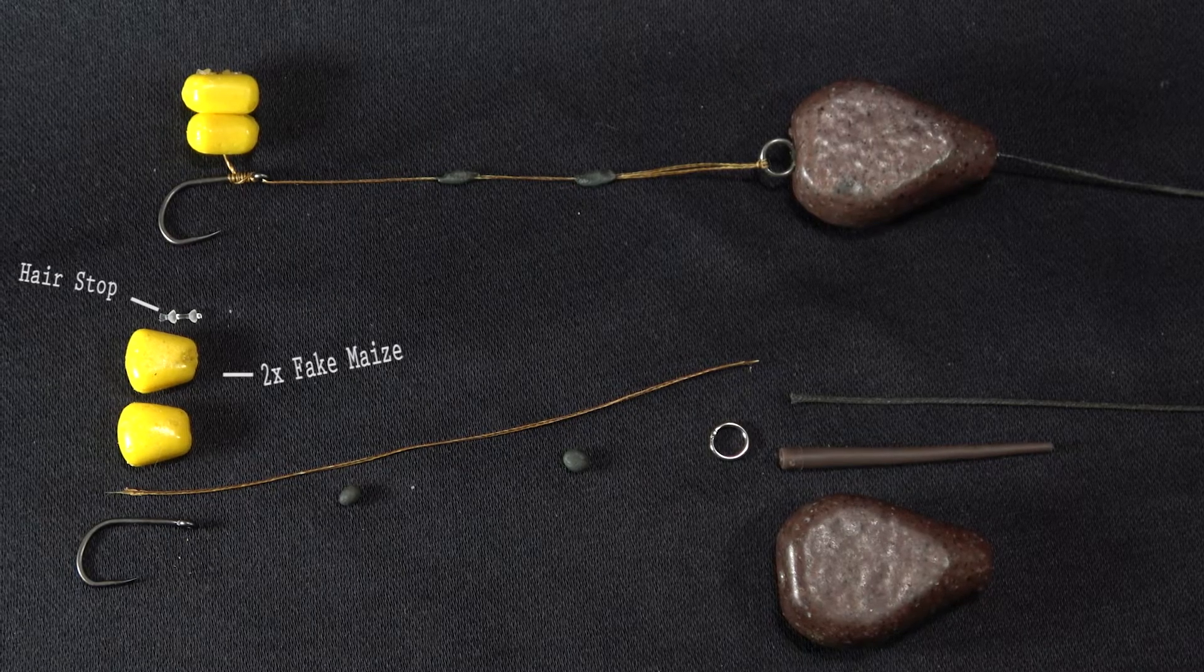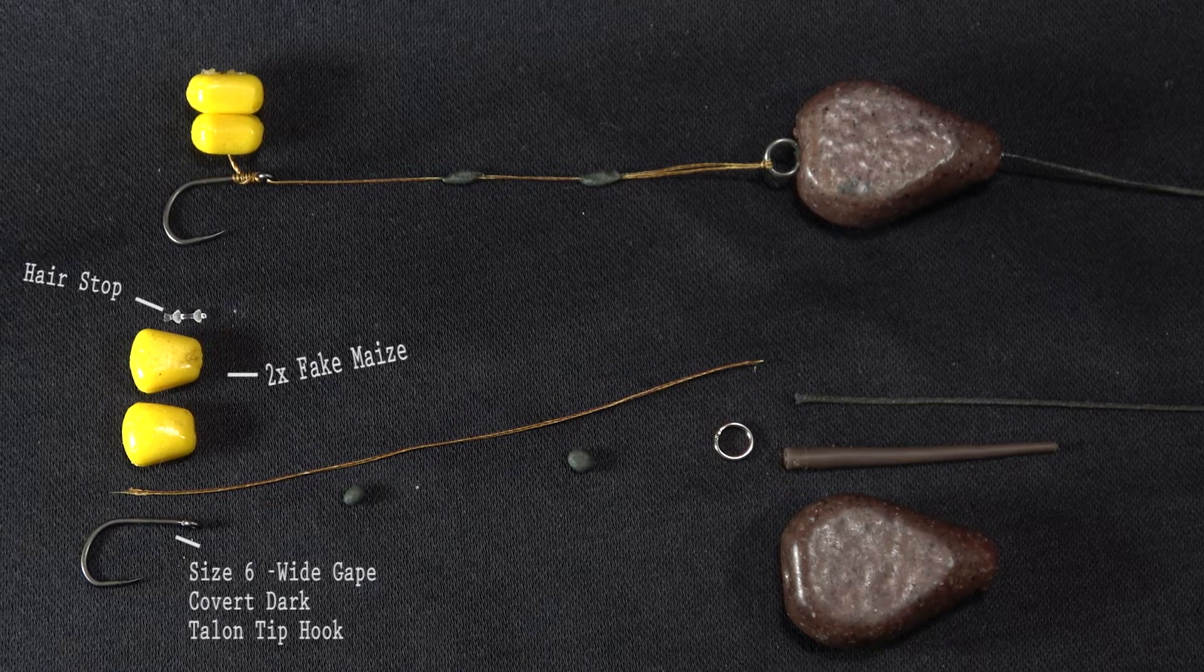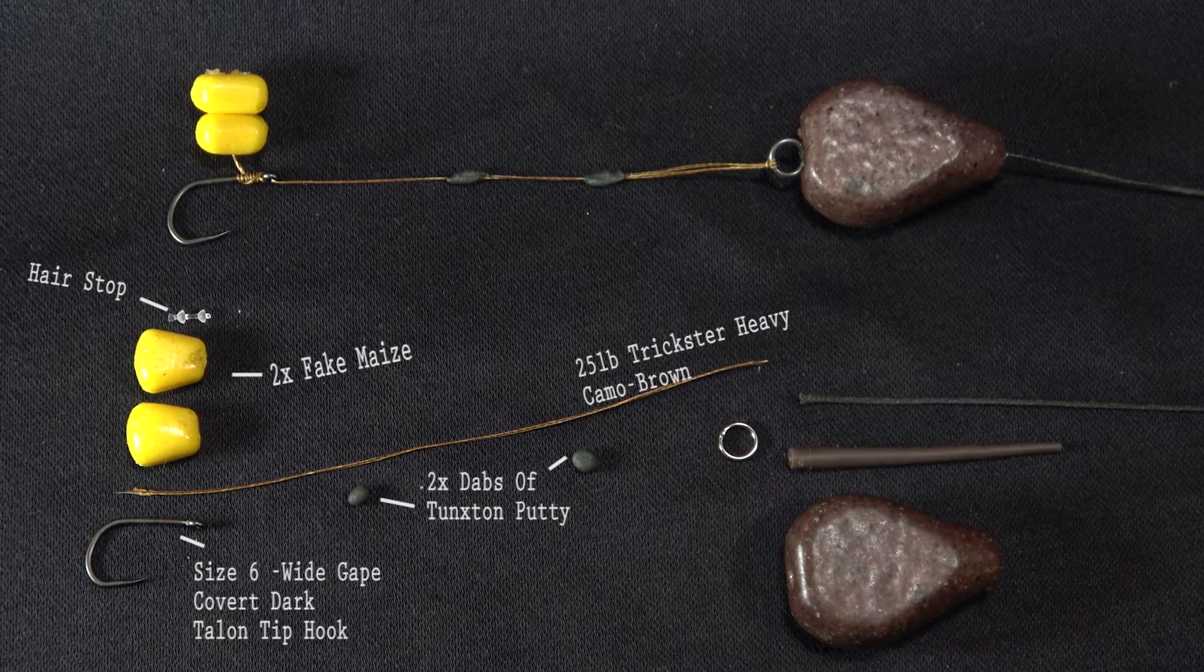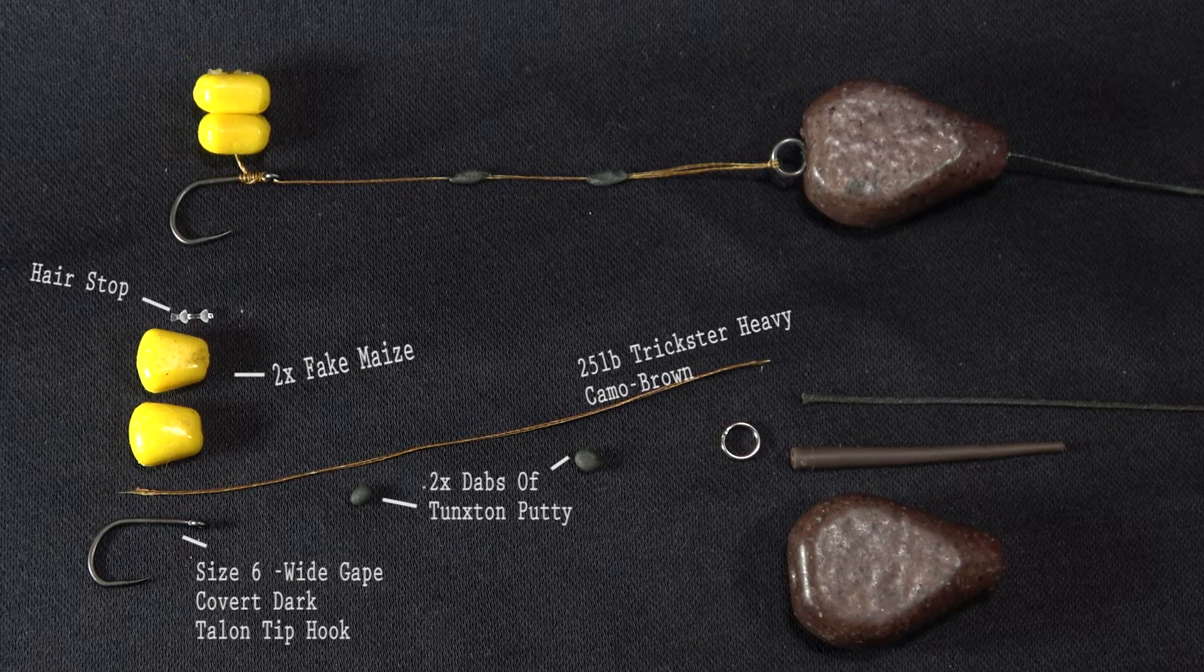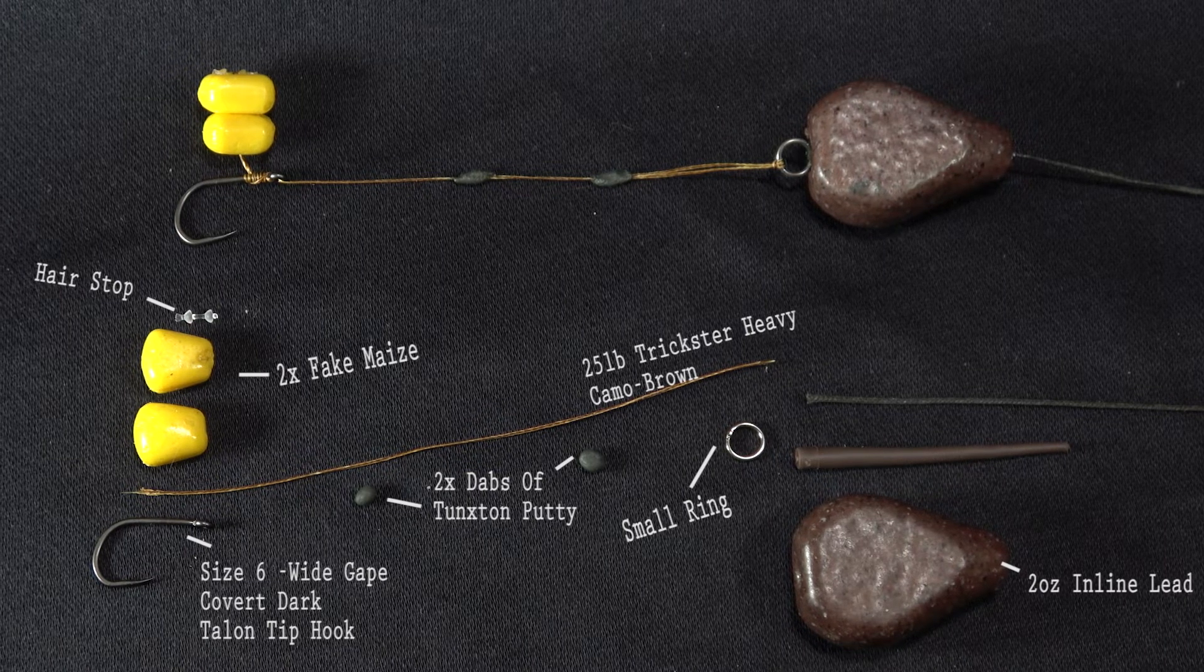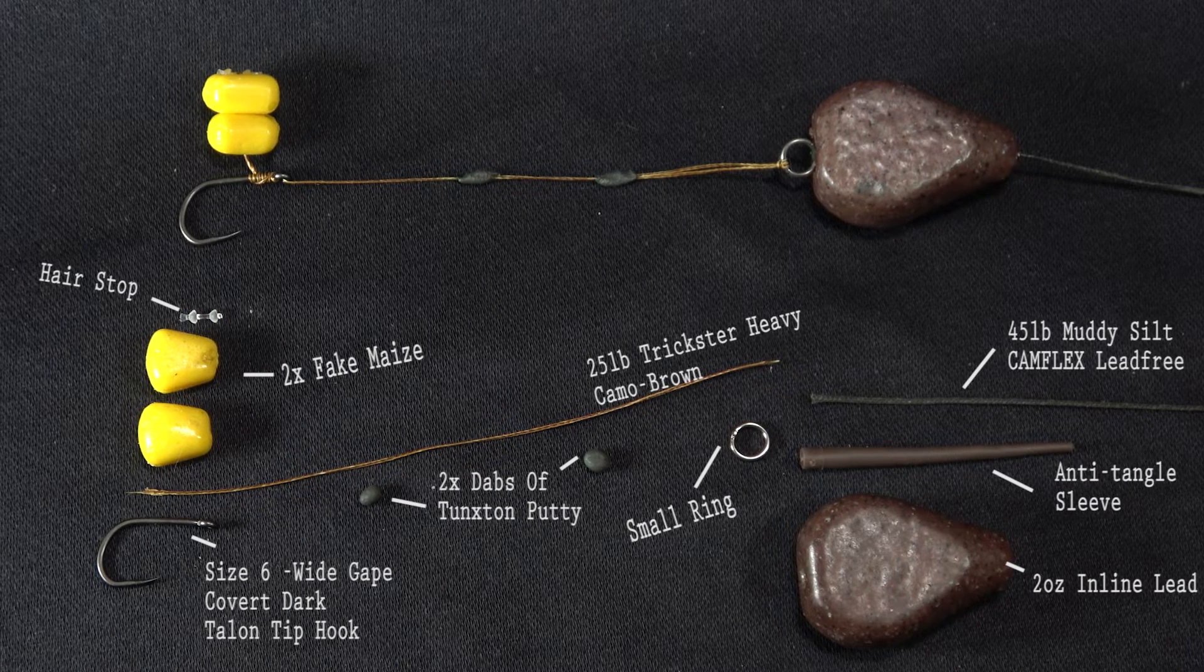A hair stop, two fake maize, a Gardner size 6 wide gape convert dark talon tip hook, two dabs of tungsten putty, Gardner 25 pound trickster heavy braid in camo brown, a small ring, a two ounce inline lead, an anti-tangle sleeve, Gardner 45 pound muddy silt cam flex lead free.